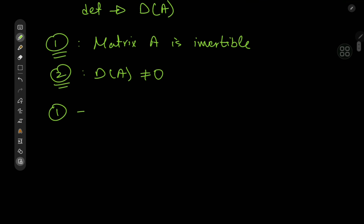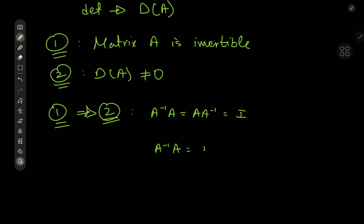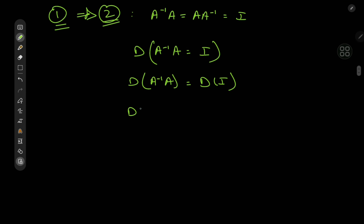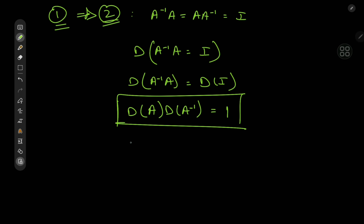Let's start with proving that 1 implies 2. If a matrix is invertible, there exists an inverse matrix A inverse such that A inverse times A equals A times A inverse, which equals the identity matrix. Taking the equation A inverse times A equals I and applying the determinant function, we get d of A times d of A inverse equals d of I, which is defined to be 1. From this equation it's clear that d of A is non-zero.